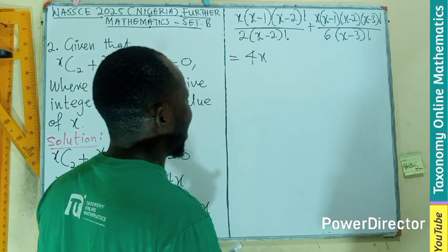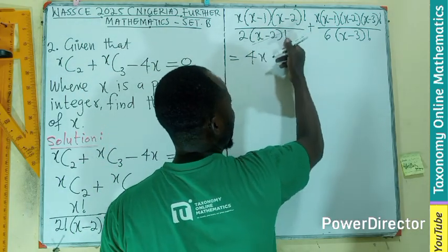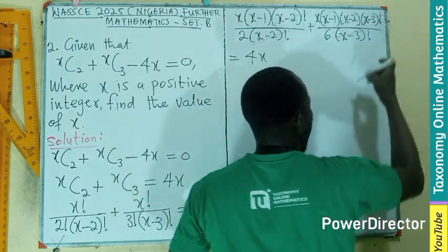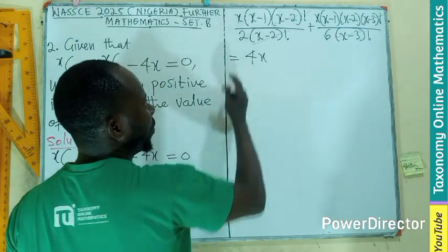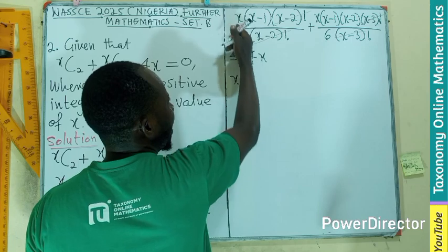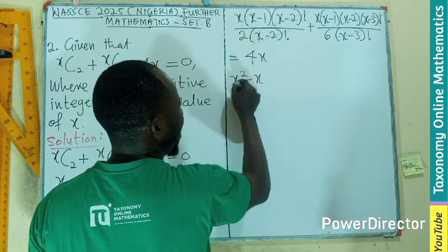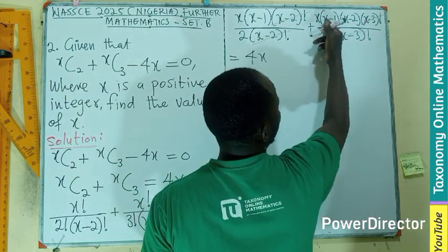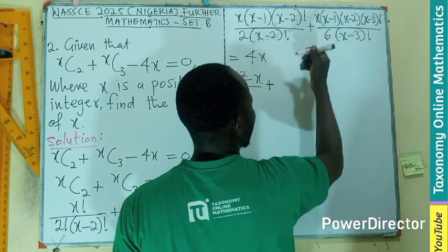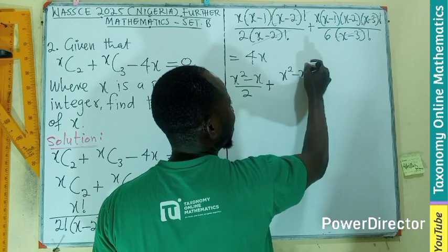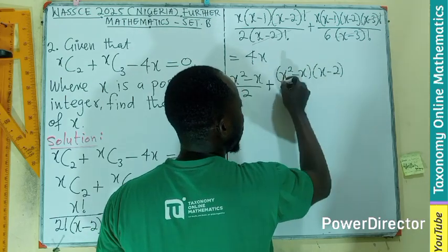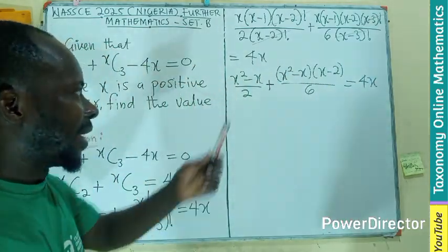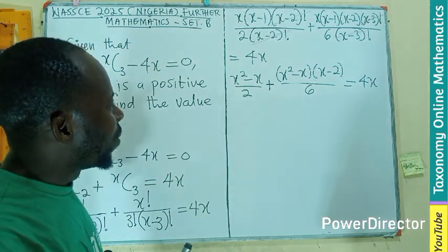From here, we can now agree that x minus 2 completely with the factorial will cancel this. Then x minus 3 with the factorial will cancel the one in the numerator there. Now, I should be left with only x times x, that will be x squared. x times minus 1 minus x, all divided by 2 from here. This is gone. I think I have to do the first one first. Let's do the first one. So, we give you x squared minus x in one bracket multiplying x minus 2 divided by only 6 equals to 4x. The second bracket there must be combined with the first one.